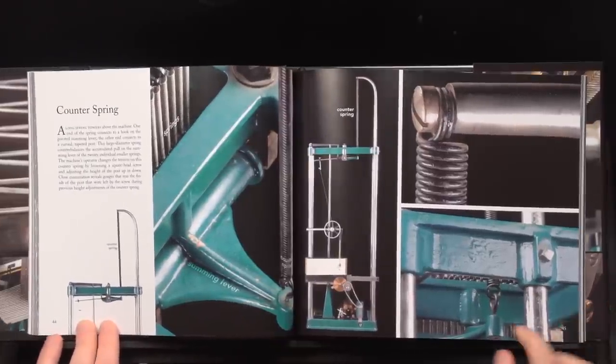This counterspring counterbalances the pull of the 20 smaller springs. The curved, tapered post that holds up the spring can be moved up and down to adjust the tension. The summing lever has a limited range of travel and needs to be kept around its middle point. If the pull of the counterspring is too much, that is the post is too high, then the summing bar will tip too far downward and get stuck. And if the post is too low, the summing lever will drop and will not be held up on its pivot. Once the height to the counterspring was set, we did not need to adjust it further.